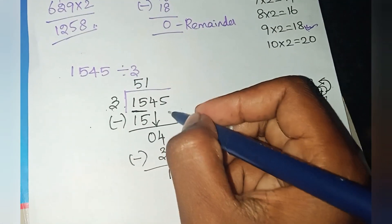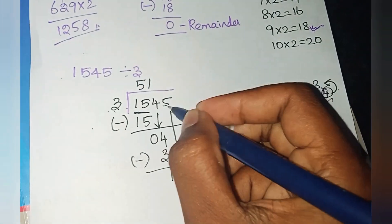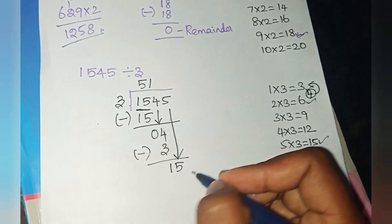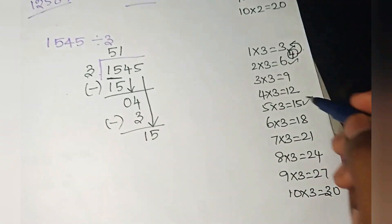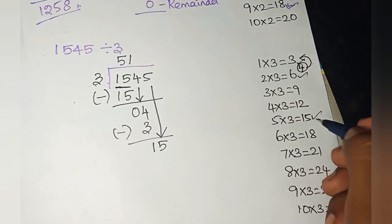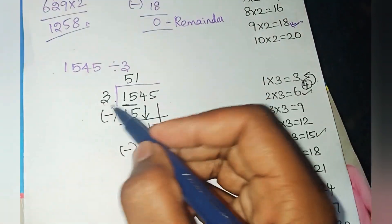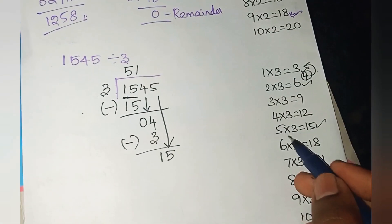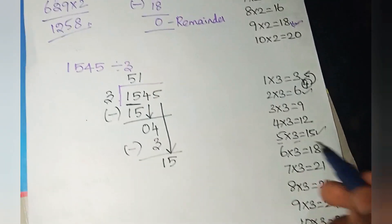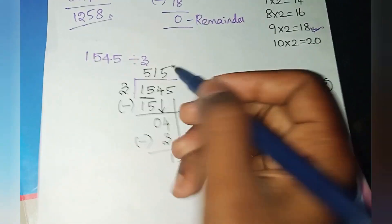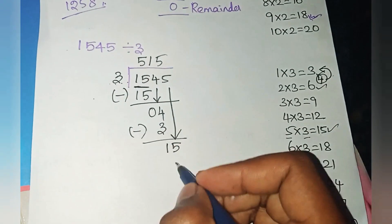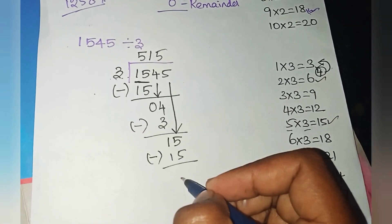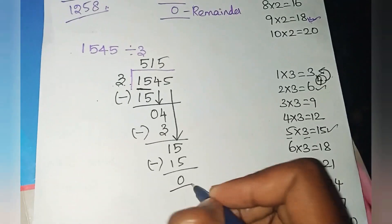Next, you have to bring down 5, making it 15. You should check the third table. 15 is directly in the third table. So, how many 3's are 15? 5 into 3 is 15. Next step is subtraction: 15 minus 15 is 0.